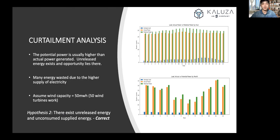Next, I will pass to Bing to explore our curtailment analysis. Thanks, Philip. After the preparation, we can start to explore curtailed energy in Orkney in 2017. In the real world, curtailment is the energy which cannot be consumed or unreleased in order to balance supply and demand, or due to transmission constraints. In this case, we want to check whether curtailment from unreleased energy and unconsumed supply both exist. As can be seen, the average potential power has the highest value, estimated using our wind speed power model. The actual power is much higher than local demand in Orkney. Therefore, we can confirm there are two sources of curtailed energy. Note that in our project, we only consider 50 wind turbines to estimate the power, because this curtailed energy is totally enough for Calooza to develop a profitable project.